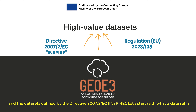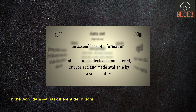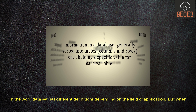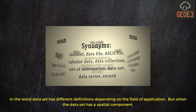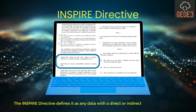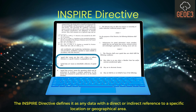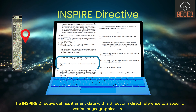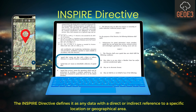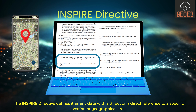Let's start with what a dataset is. The word dataset has different definitions depending on the field of application. When the dataset has a spatial component, the Inspire Directive defines it as any data with a direct or indirect reference to a specific location or geographical area.